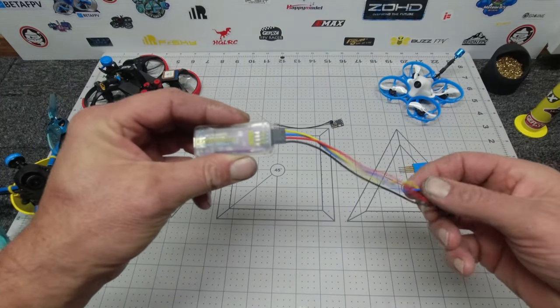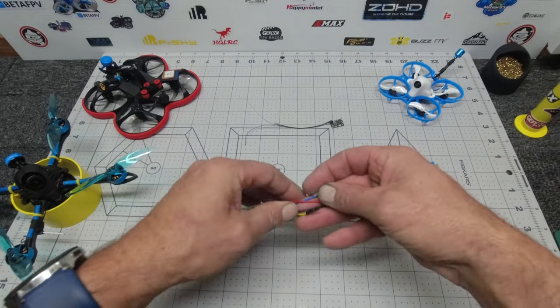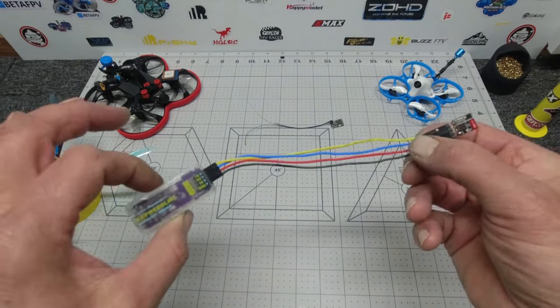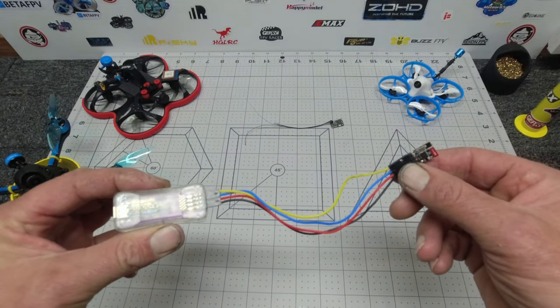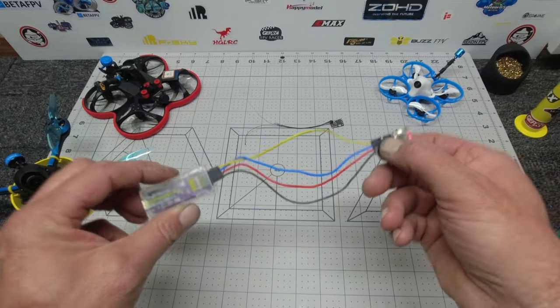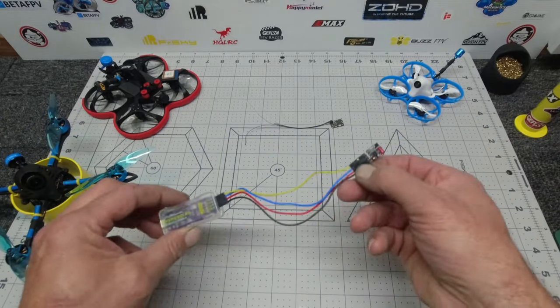From the top we have TX, RX, 5 volt and ground. The next one along is the RX which is the blue, and we need to make sure we plug that into the TX of the receiver. Let's jump over to the configurator and we'll run through those steps so we can see how easy it is to flash this receiver.